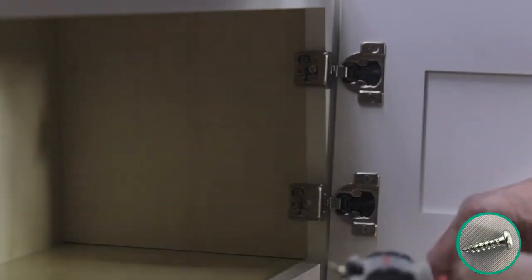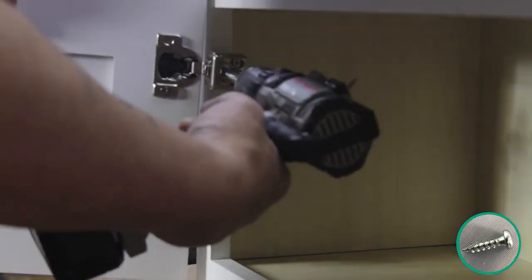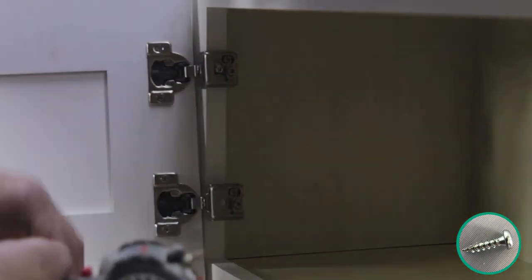Now place your door with attached hinges to the inside lip of the face frame and attach them to the cabinet using pre-existing dimples on the face frame.